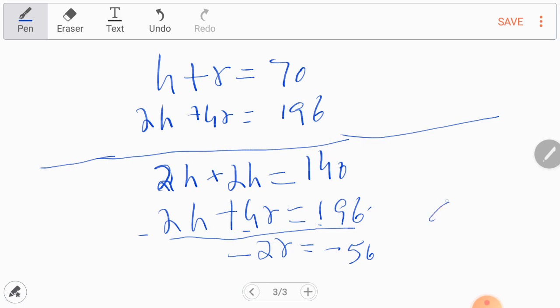And it will yield r equals 28. Minus, minus will be cancelled, and r will be 56 over 2, and it will give you r equals 28.